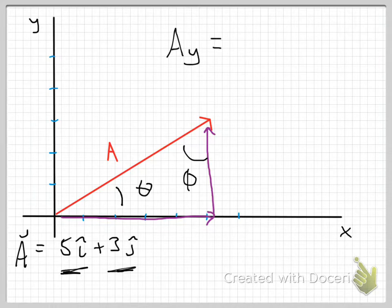I would say that A sub y, which is the adjacent side to phi, so I'm going to go through the cosine, because cosine is adjacent over hypotenuse, is now the magnitude of A times the cosine of phi. Remember what I found earlier? A sub y was equal to A times the sine of theta.